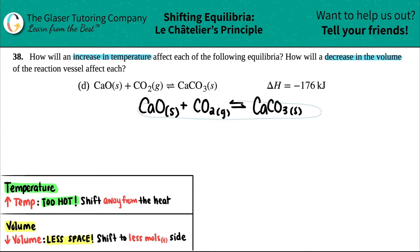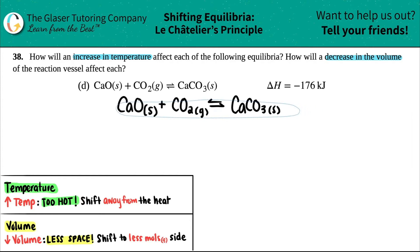Now the next thing I'm going to do: if they give me a delta H value, I don't really care about the number. The only thing I care about is where the heat is—is the heat on the reactant side or the product side?